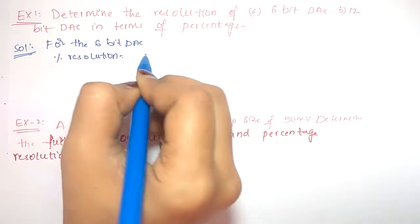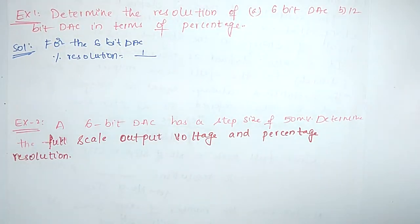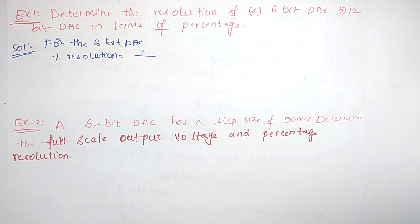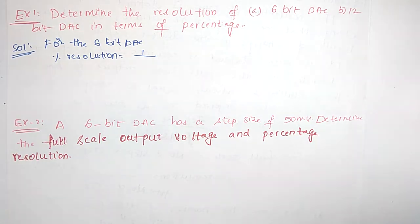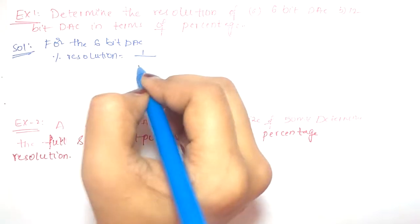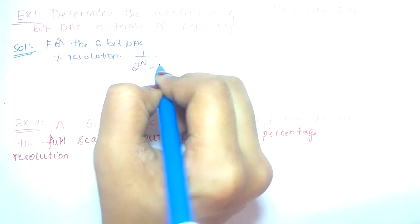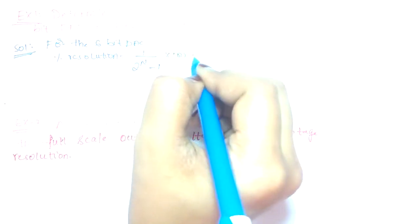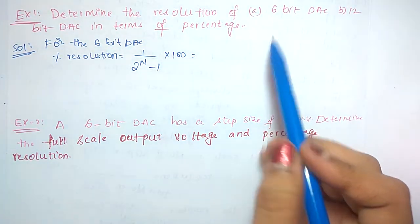There are two types of formulas: one is step size divided by full scale multiplied by 100, or alternatively one divided by number of steps multiplied by 100. Here, as we don't know step size and we don't know full scale, we use the formula: one by number of steps. The number of steps formula is 1 divided by (2 power n minus 1) into 100. Here, n equals 6 bits.